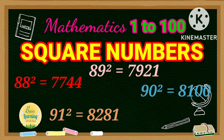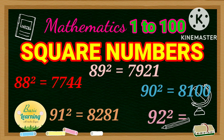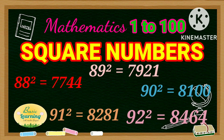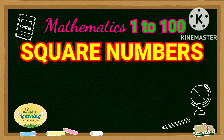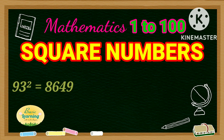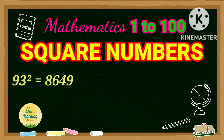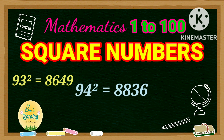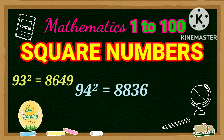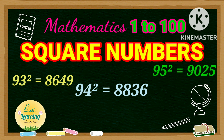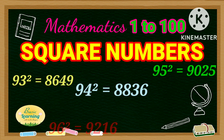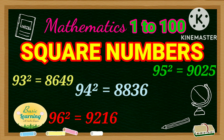Square of 91 is 8,281. Square of 92 is 8,464. Square of 93 is 8,649. Square of 94 is 8,836. Square of 95 is 9,025.